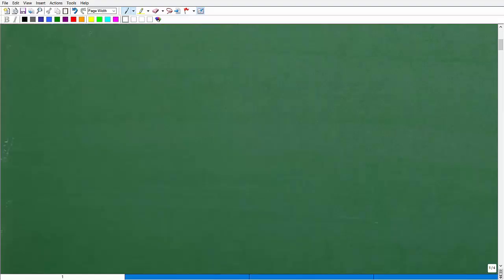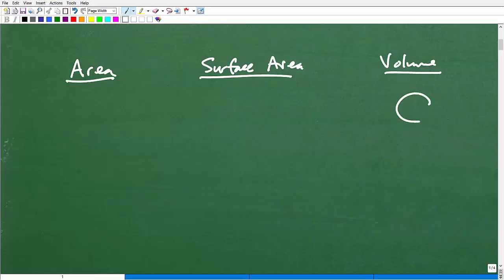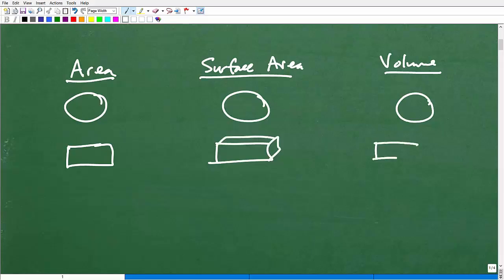But we want to make sure that we don't confuse area and surface area, and volume. So if you're studying or interested in how to find the volume of a sphere, you might also be interested in finding the surface area of a sphere or the area of a circle. These are different. Each one of these requires a different formula. All right, and this is the same as, let's say, the area of a rectangle or the surface area of, let's say, a box, like a shoe box. Or the volume of a shoe box. So the concepts are different.